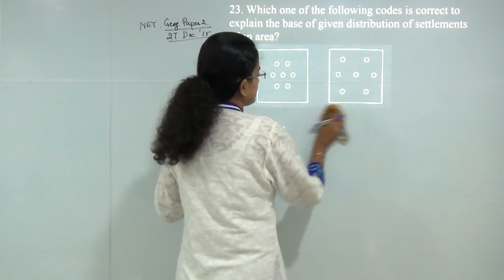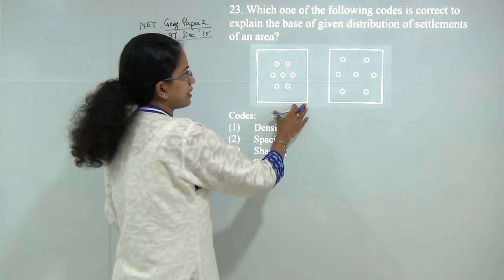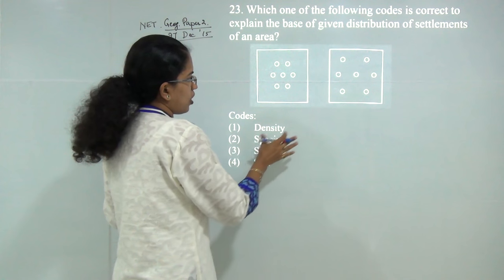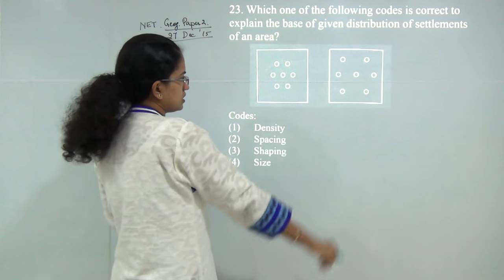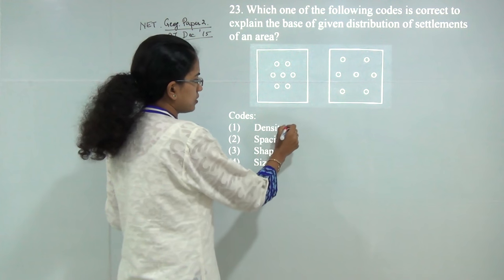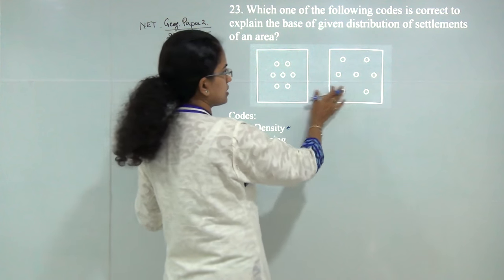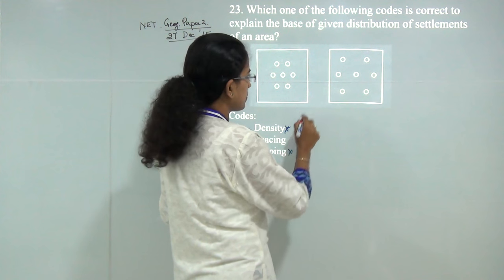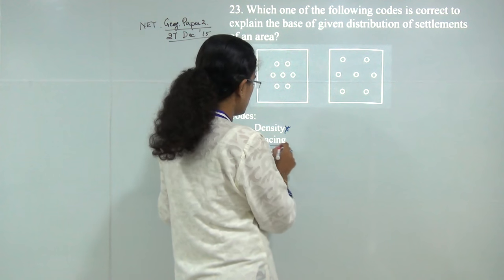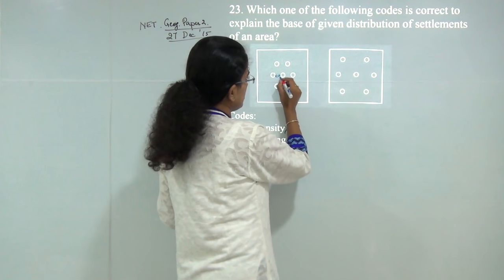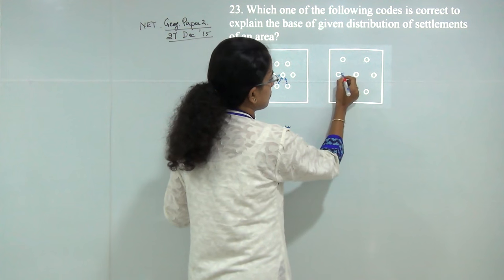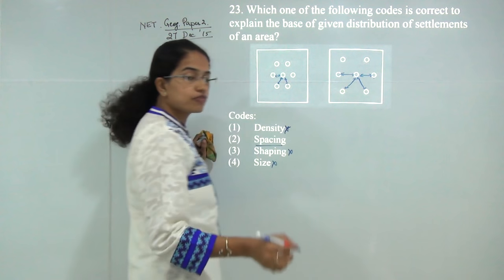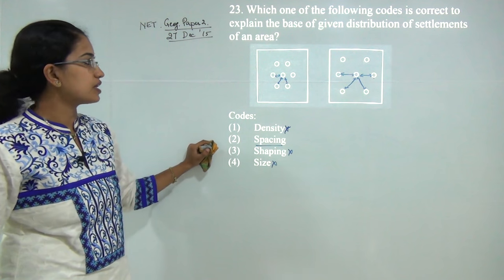Now you have two settlement patterns. You need to find on what basis they resemble or differ. I cannot say density because the area remains the same with the same seven settlements. Shape and size remain the same. The only difference is spacing—here the settlements are close by compared to here where settlements are far away. There are a lot of questions this time from settlement and urban geography.